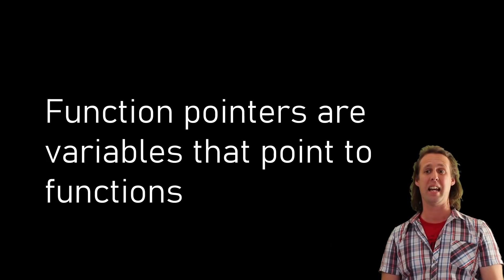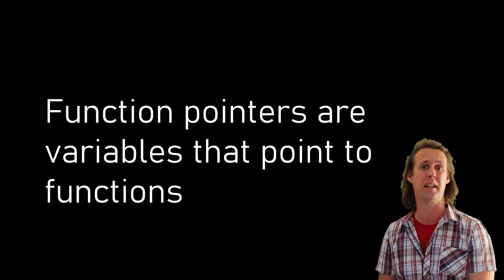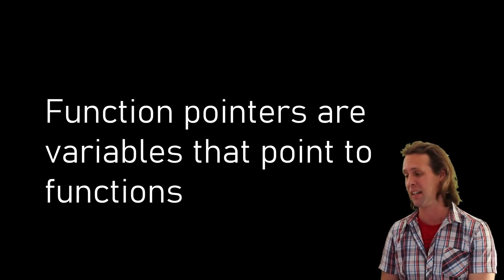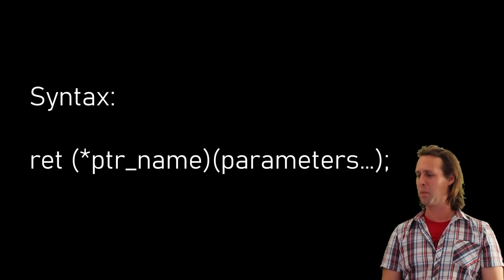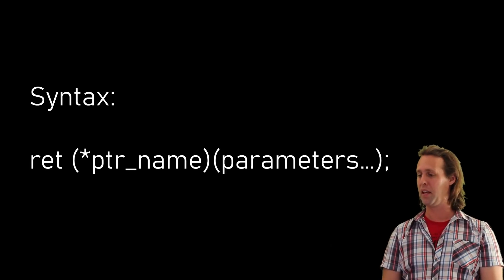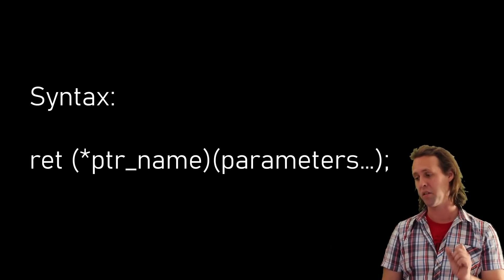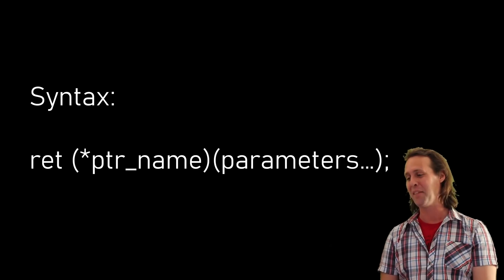So first of all, what is a function pointer? A function pointer is pretty simply just a variable that points to a function rather than pointing to data. The syntax for creating a function pointer looks a little bit strange. We put the return type, and then we put the pointer name with a little star beside it in brackets. And after that, we've got the parameter list.